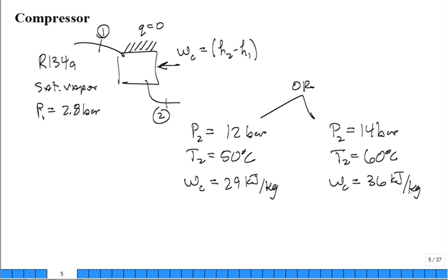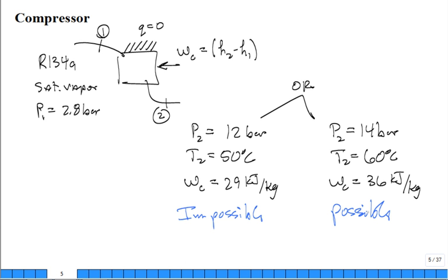One of these compressor cases is possible and one is not — but you can't really tell which one. You'd just have to guess and you'd have a 50-50 chance. There's nothing to tip your hand. But later, when we use the property entropy and apply the second law quantitatively, we'll find that one is impossible and the other is possible. That's the value of the second law of thermodynamics.